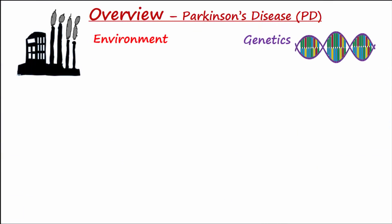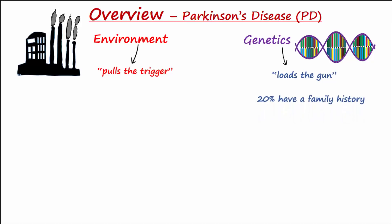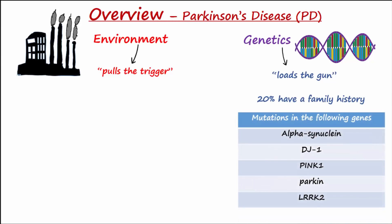It is believed that both the environment and genetics are contributing factors for disease development. In fact, many neurologists tell their Parkinson's patients the genetics loads the gun and the environment pulls the trigger. 20% of patients have a family history of the disease, and mutations in genes that code for alpha-synuclein and the genes DJ1, PINK1, Parkin, and LRRK2 have been tied to development of PD.